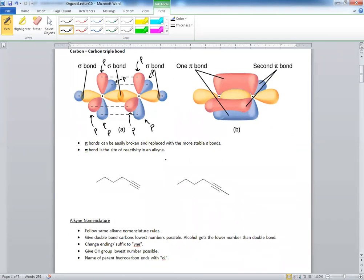So there are two types of alkynes. You have a terminal alkyne and you have an internal alkyne.